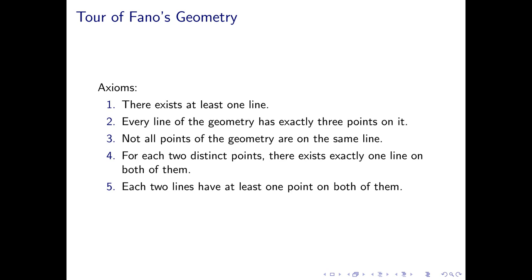Normally what we do in a discussion like this is try to draw a model right away. But for Fano's geometry, that would be rather difficult — there are a lot of different ways one could go. So what we're actually going to do first is prove one theorem. We notice that axioms 4 and 5 give us a stronger result than just axiom 5, so we'll prove that first, then use that theorem to develop our model.